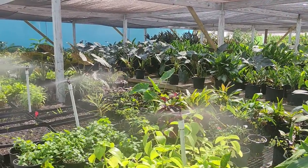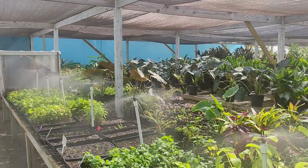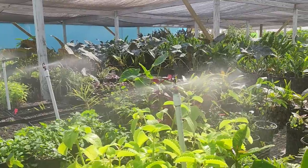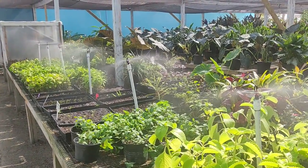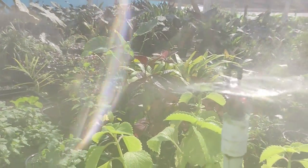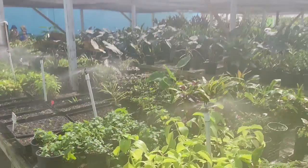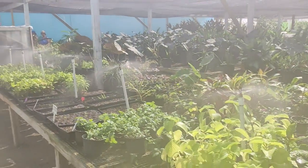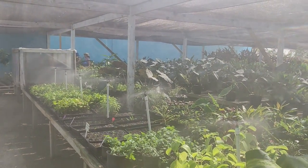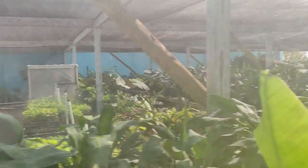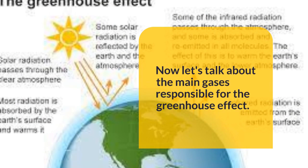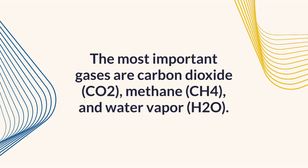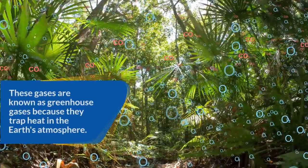Just like the tropical rainforests of the Amazon jungle, the Blue Mountains, Trinidad, or Guyana. The gases responsible for the greenhouse effect are carbon dioxide, methane, water vapor, and others. These gases are known as greenhouse gases because they help to trap heat in the Earth's atmosphere.